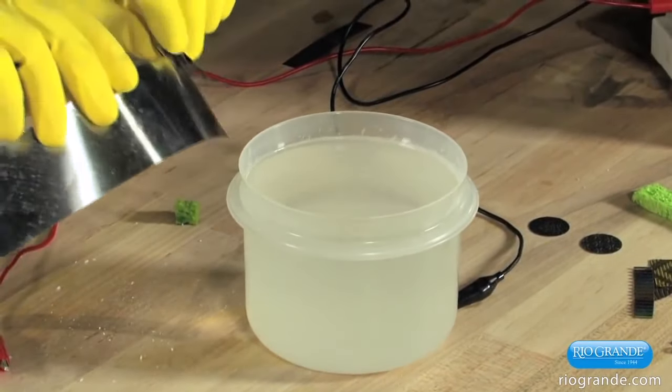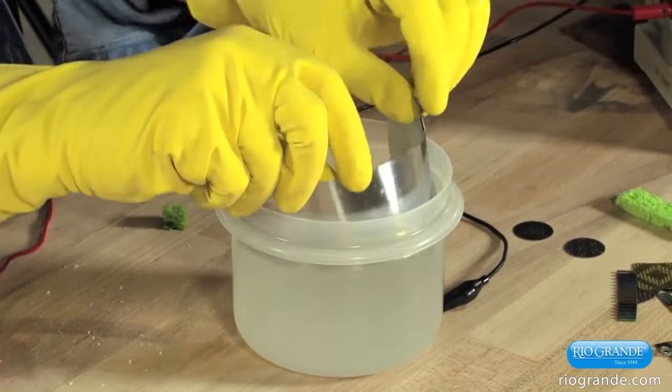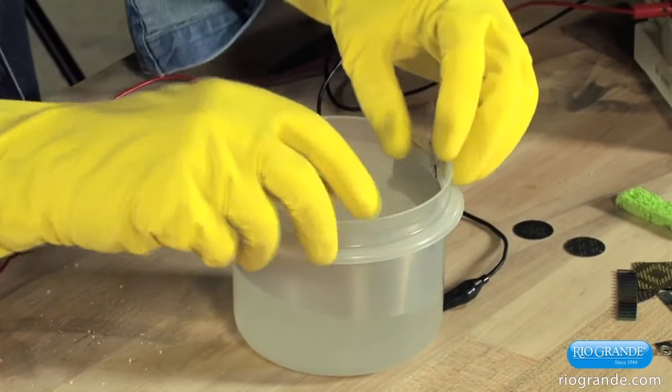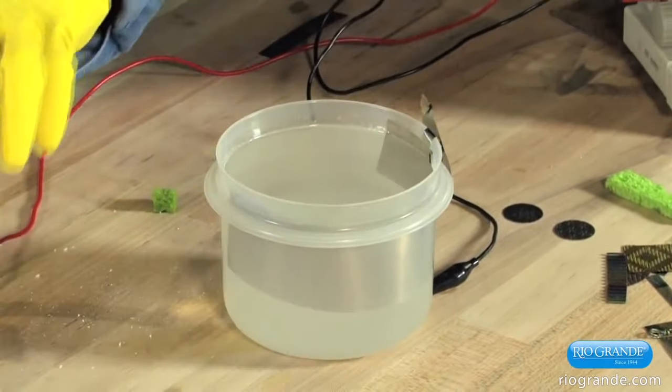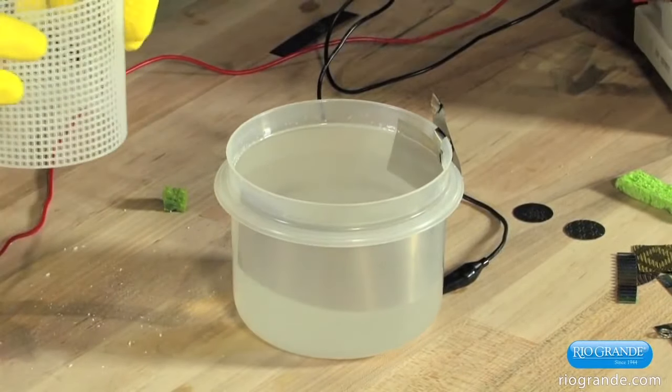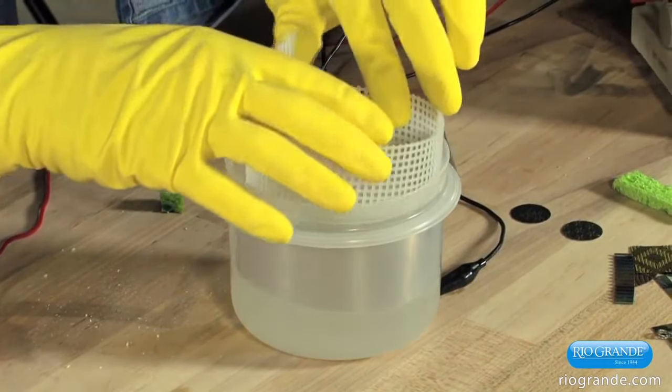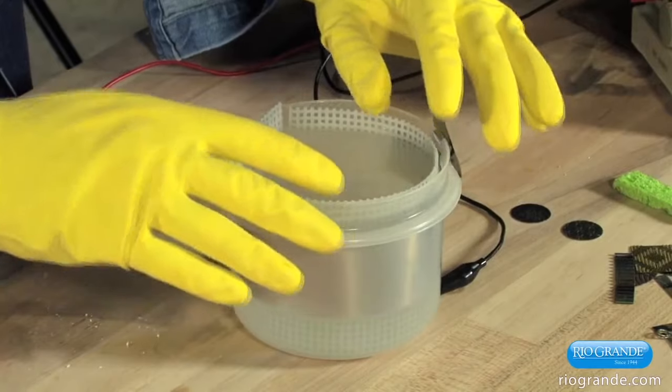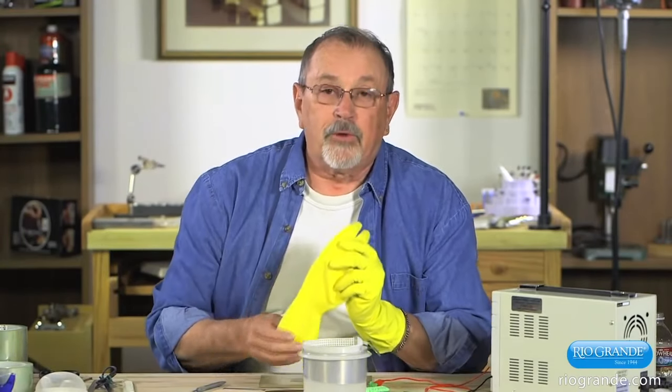We need a cathode, a piece of stainless steel. We need a little screen to remind us to not touch things inside the bath. This is an electrolytic process. There are some dangers and some safety rules, and one of those is rubber gloves.